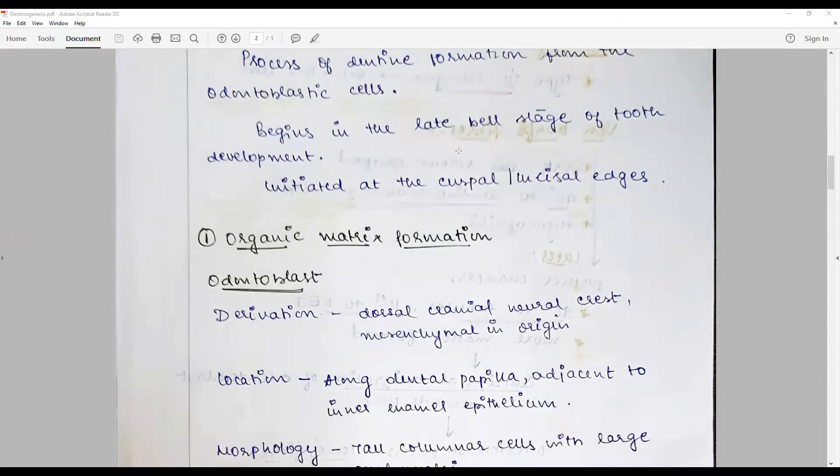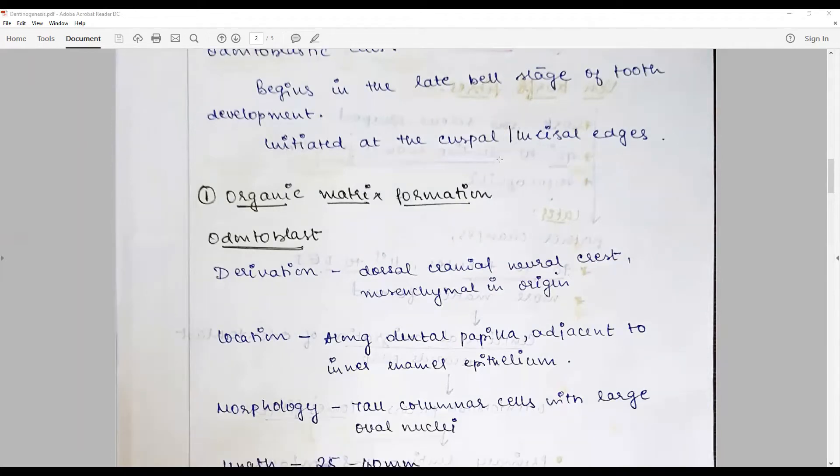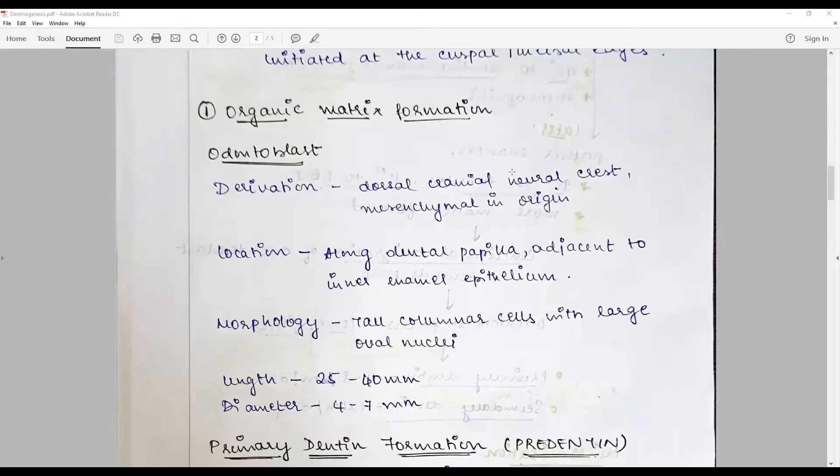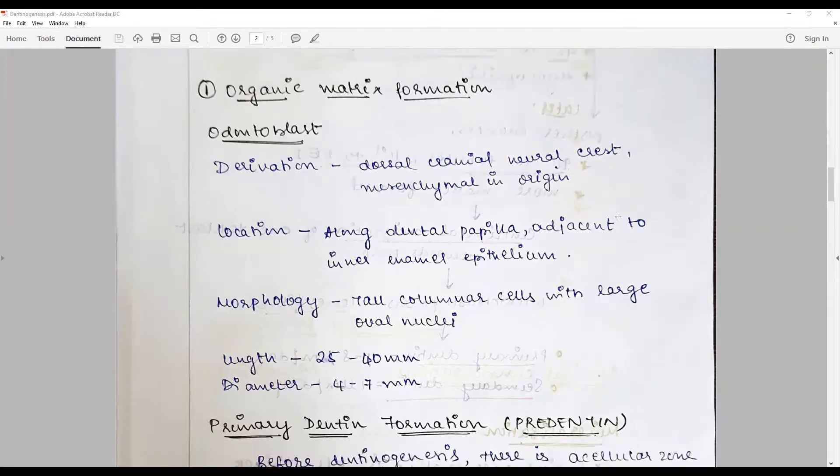They are derived from the outermost layer of the dental papilla, adjacent to the inner enamel epithelium. Morphologically, they appear as tall columnar cells with a central large oval nucleus, of length about 25 to 40 micrometers and diameter of 4 to 7 micrometers. Under the organizing influence of the inner enamel epithelium in the early bell stage through secretion of signals, the outermost layer of the dental papillary cells turn into odontoblasts.